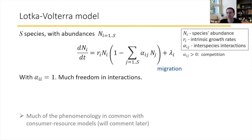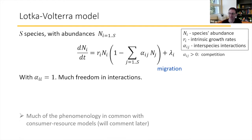There are other models that some people feel more comfortable with — more mechanistic descriptions with explicit resources and consumers. That's something I'll only briefly touch on. The route I'll be taking, which many others have taken in other fields, is to say: if we don't know all these interaction numbers, let's sample them randomly from some distribution. So the basic reference model is that the off-diagonal numbers in the matrix are independent random variables, except I allow a correlation between the effect of species i on species j and the reverse effect — that's the level of symmetry I'm allowing.